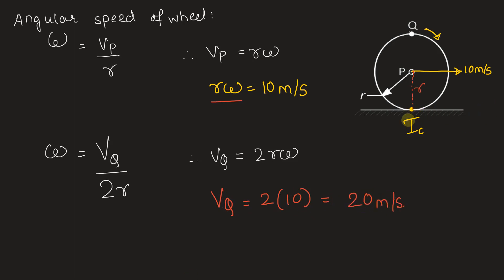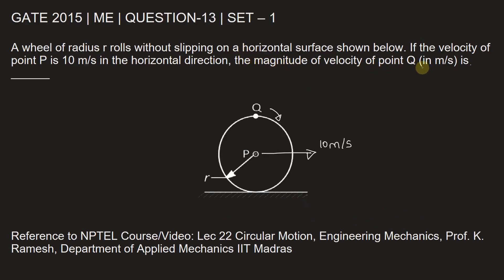So with the concept of instantaneous center we can find velocity of point Q when velocity of point P is given, and vQ being 20 meters per second. Let's fill in the answer: magnitude of velocity of point Q is 20 meters per second.